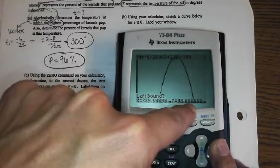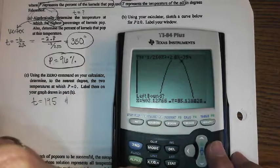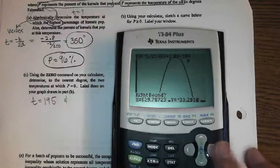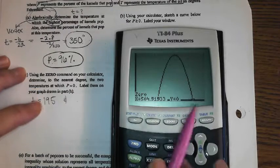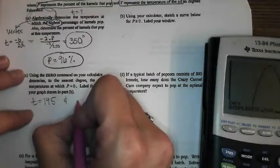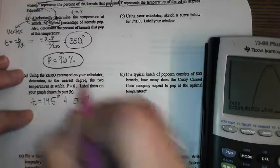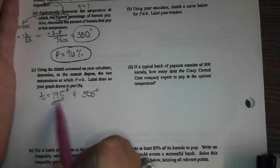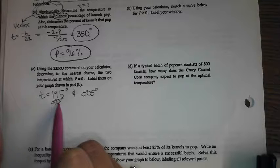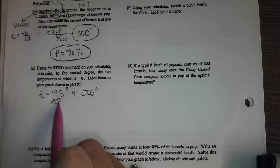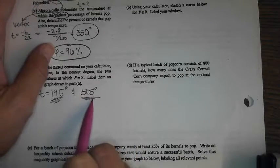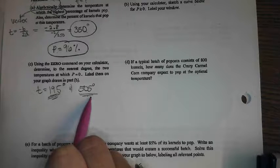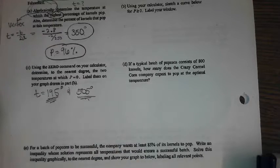I'll do it again for this zero over here. I'm going to bring my cursor to the left of it. There it is. Enter, and then go to the right of it. Enter, enter, and I get 504.9, which is 505. So, what we get from that is, if you pop your popcorn at 195 degrees, nothing's going to pop. It's not hot enough. Zero percent are going to pop. If you do it at 505, zero percent are going to pop. I would think they would just probably light on fire. Okay? I'm just guessing. Trying to make sense of it all.